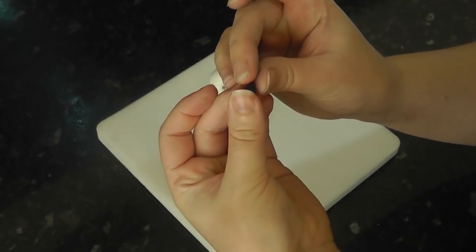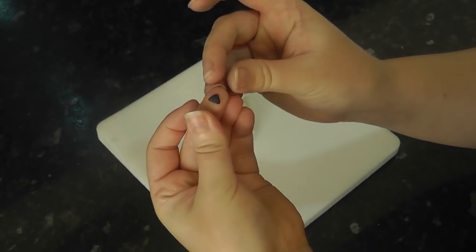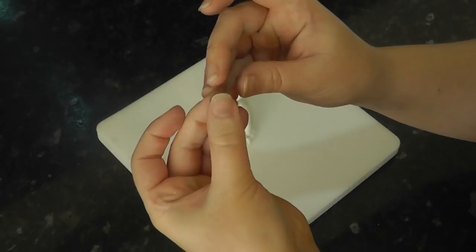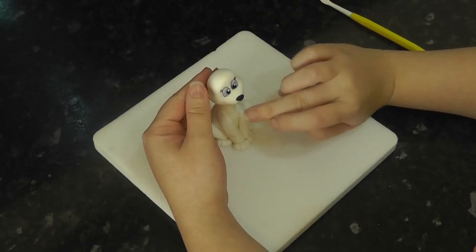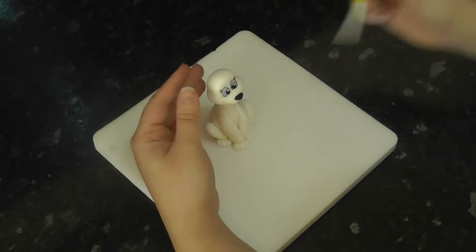The nose is made with black paste gently squeezed into a triangle shape using both your thumbs and a finger. Add this to the muzzle and flatten it out to the size you want using your dresden tool to keep the shape.